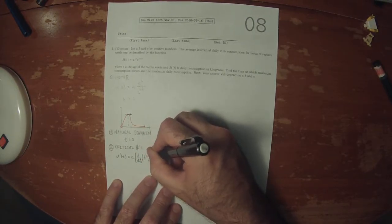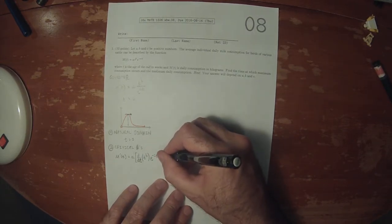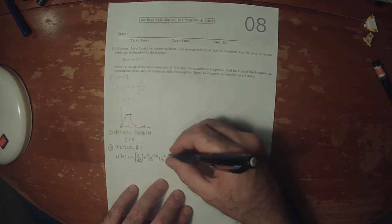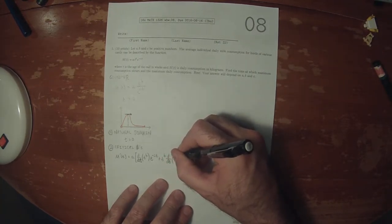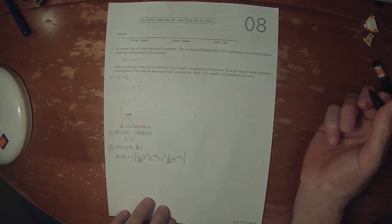...plus T to B, derivative of E to negative CT, for the product rule.